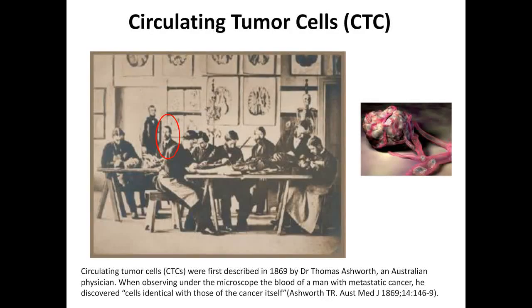Circulating tumor cells were first described in 1869 by an Australian pathologist, Dr. Thomas Ashworth. Under the microscope, he found — actually by accident — that those cells were identical to primary tumor cells in a patient's blood with metastatic cancer. Because they were found in peripheral blood, he named them circulating tumor cells.